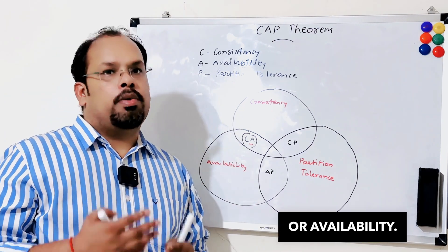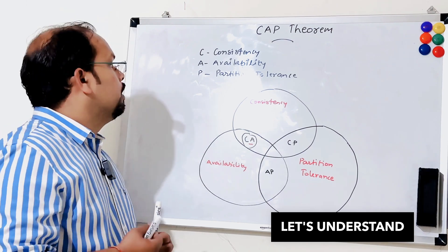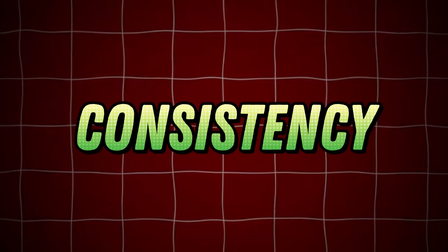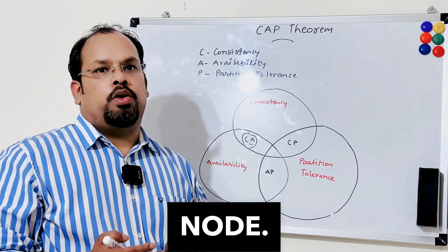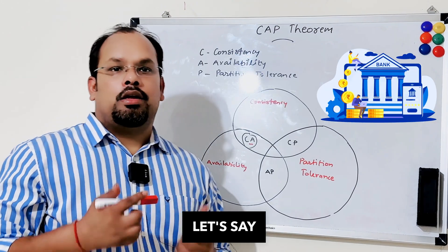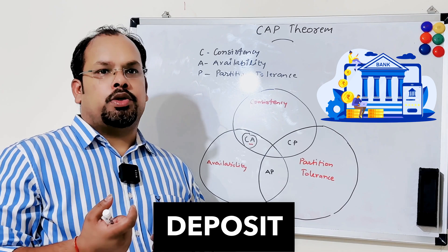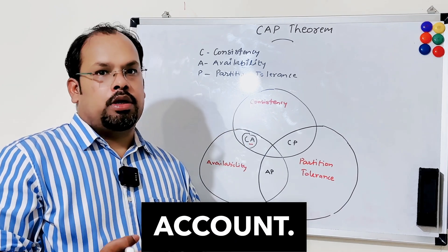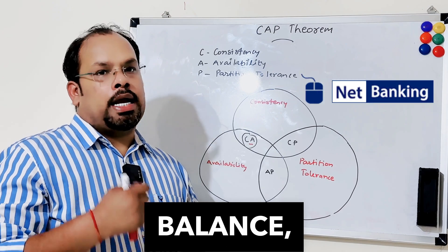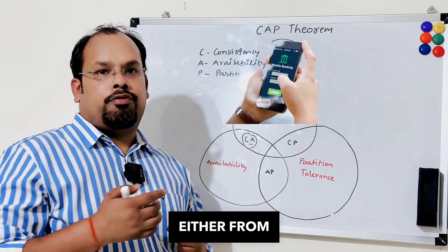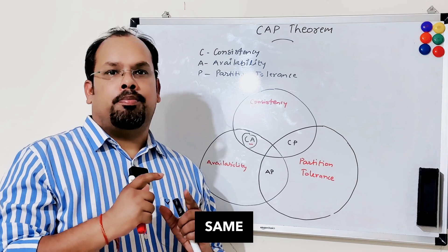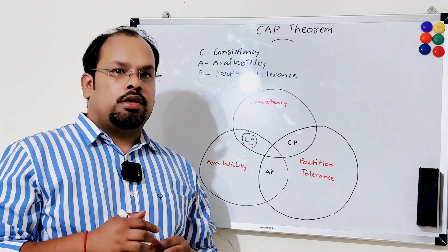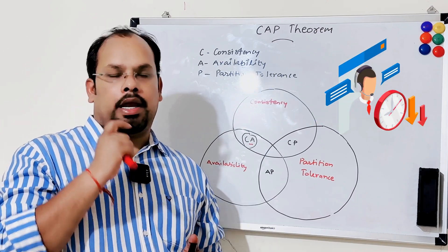either consistency or availability. Now let's understand these three terms in detail. Consistency means data should be consistent across the nodes. For example, let's say you have a bank account and you deposit 100 rupees. If you check the balance either from net banking, from the mobile app, or an ATM, you should get the same balance.